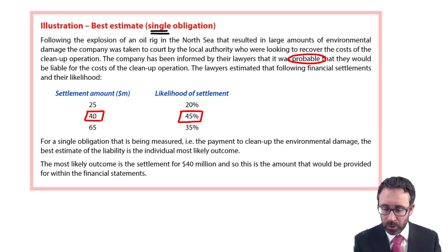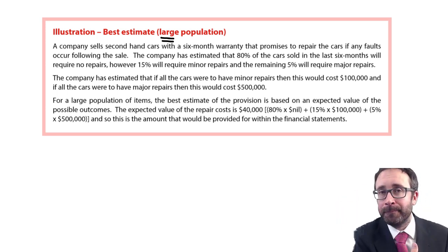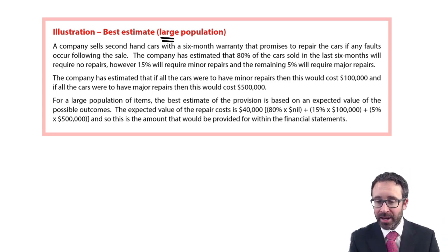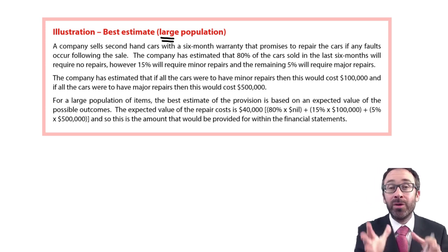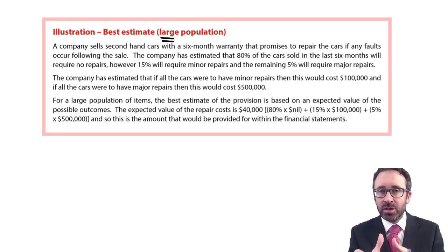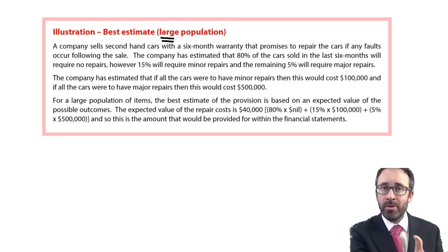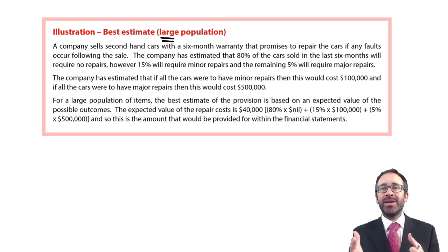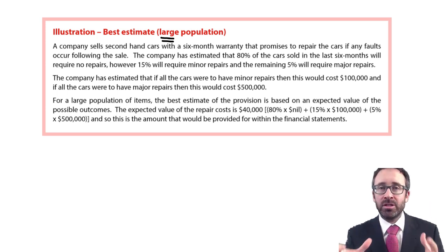Now we'll look at it as a large population — this is where you can make mistakes if you apply the wrong method. A company sells second-hand cars with a six-month warranty that promises to repair the cars if any faults occur following the sale. There's a large population of cars sold, each with a warranty. We need to make a warranty provision because some of those cars are going to break down. It's probable that some repairs will be carried out.